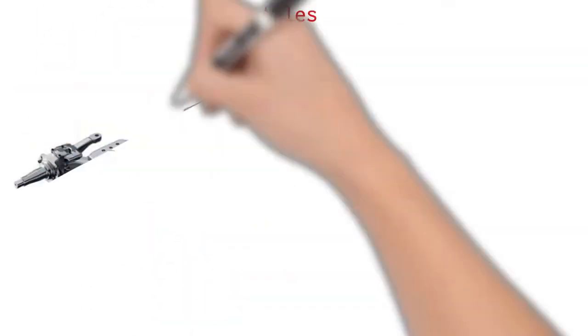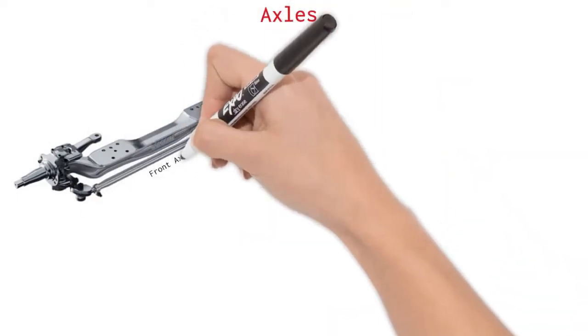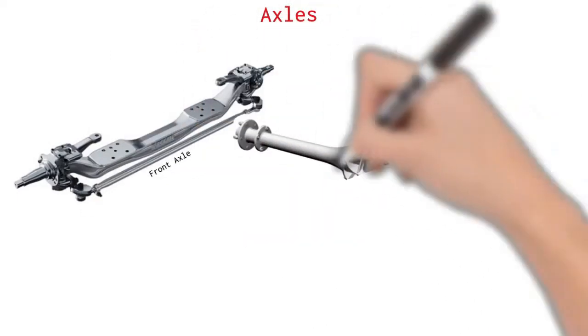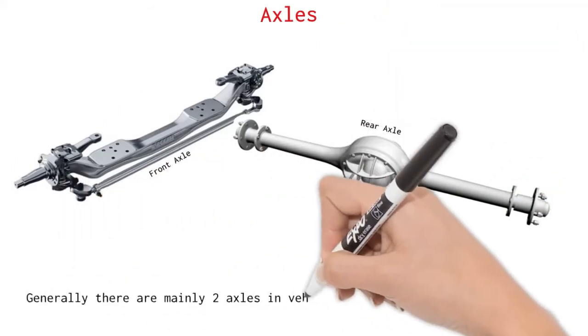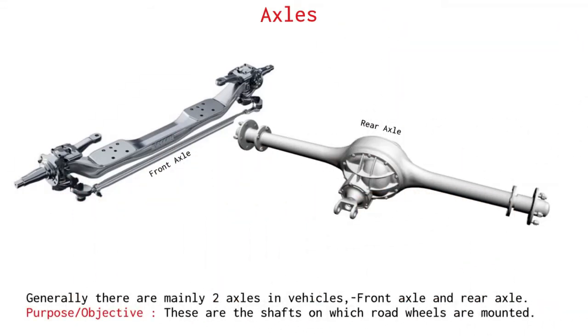Axles. These are the shafts on which the road wheels are mounted. Generally, there are mainly two axles in a vehicle: front axle and the rear axle. Commercial vehicles may have larger number of axles.